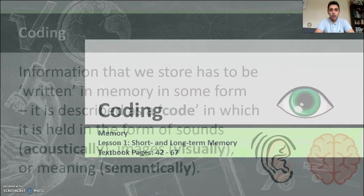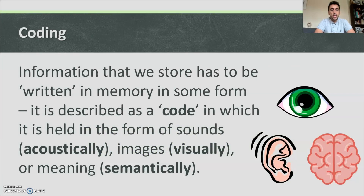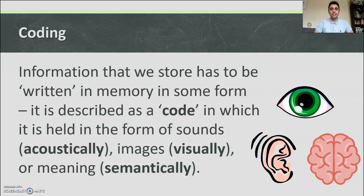Let's start with coding. Information that we store has to be written in memory in some form. It is described as a code in which it is held in the form of sounds acoustically, images visually, or meaning semantically.